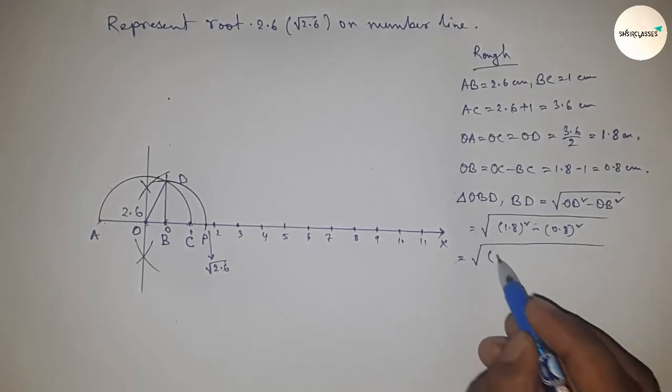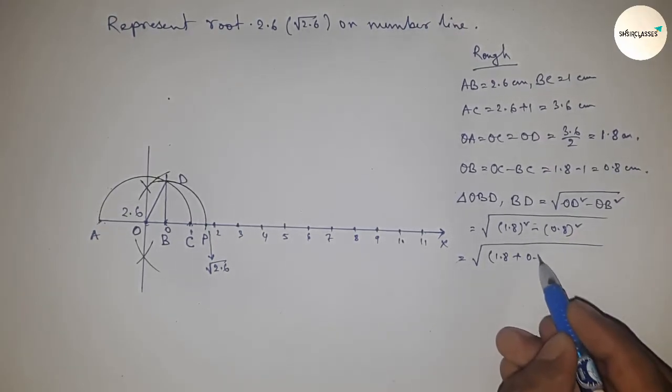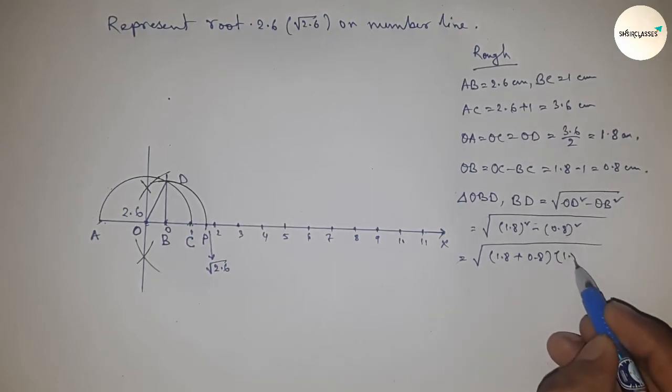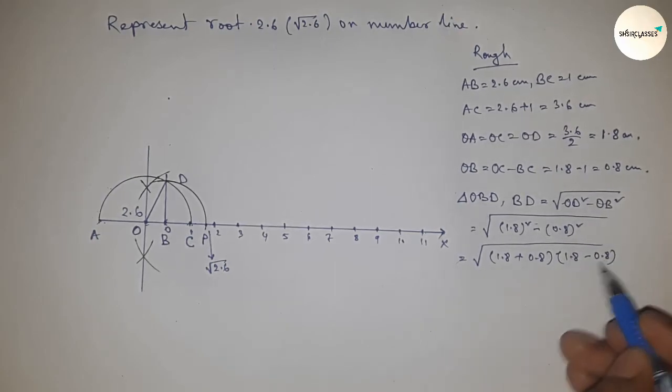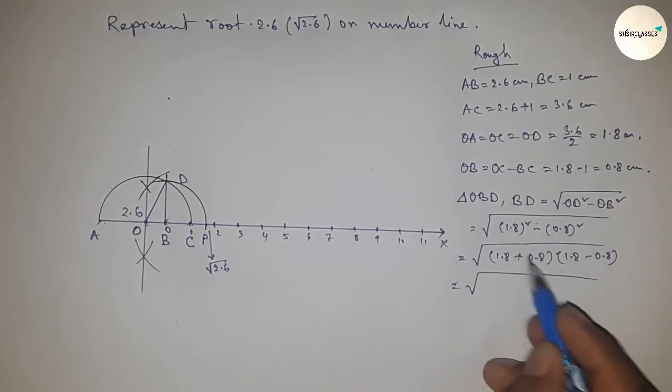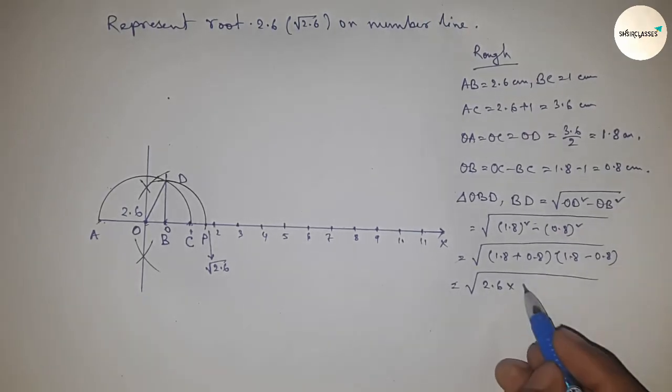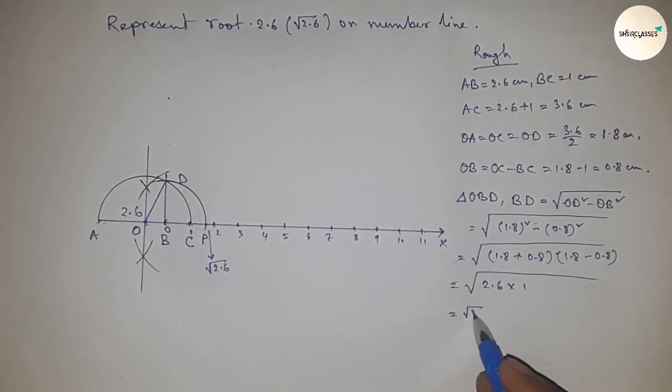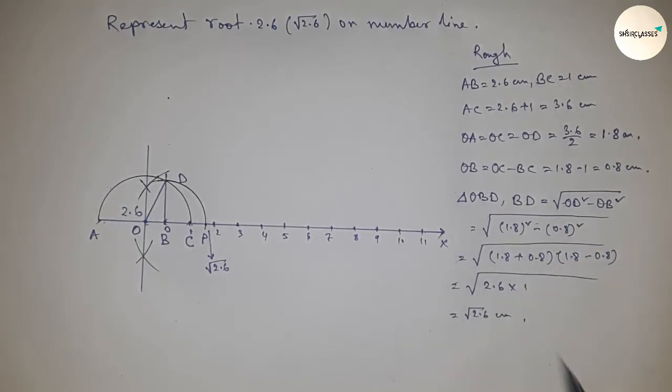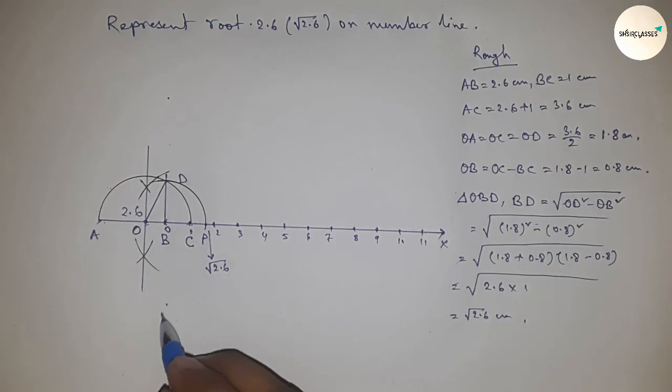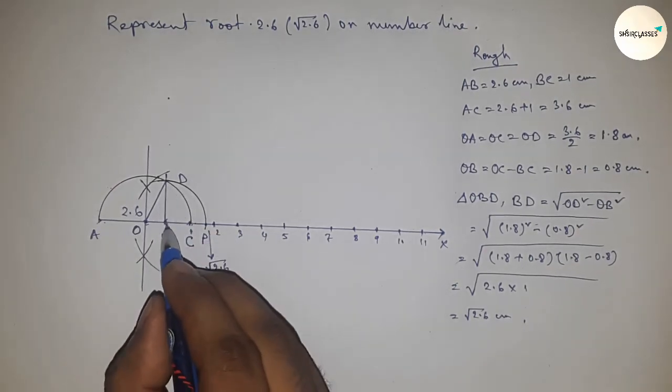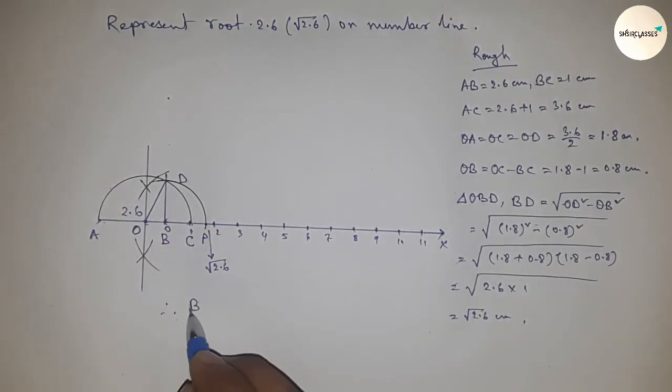So now I'm going to use the formula a square minus b square equals a plus b times a minus b. So from this, this is 2.6 and from this, this is 1. So equal to root over 2.6 centimeters. Therefore, distance BD and BP are equal, so BD equals BP equals root 2.6 centimeters.